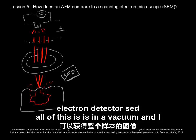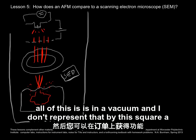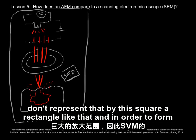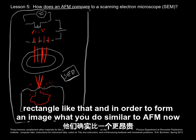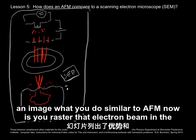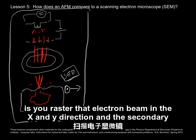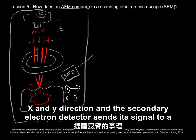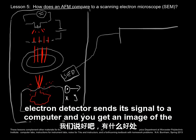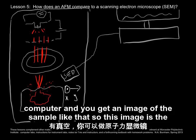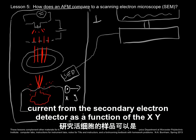All of this is in a vacuum. To form an image, similar to AFM, you raster the electron beam in the x and y directions, and the secondary electron detector sends its signal to a computer, giving you an image of the sample. This image is the current from the secondary electron detector as a function of the x-y position of the beam.